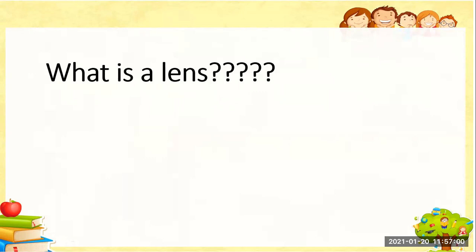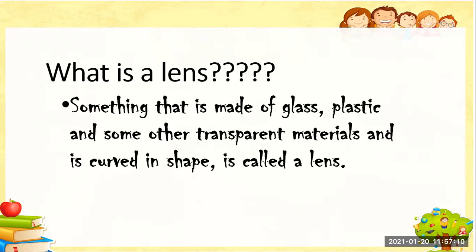Here comes a question: what is a lens? When learning about lenses, we came to know two important things. Number one, it is made of glass, plastic, and some other transparent materials. Number two, it should be curved in shape. That is what we call a lens.